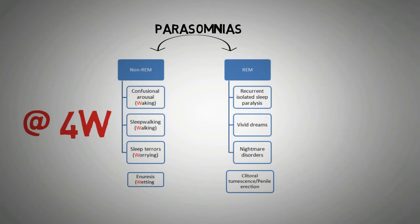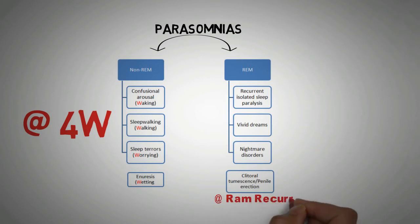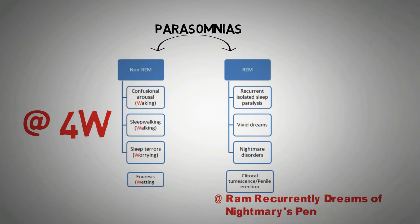Similarly, parasomnias that occur during REM sleep are recurrent isolated sleep paralysis, vivid dreams, nightmare disorders, and one important behavior also seen during REM is penile erection or clitoral tumescence. The mnemonic for them is RAM: 'RAM recurrently dreams of nightmare is pain,' where RAM is for REM sleep, recurrently is for recurrent isolated sleep paralysis, dreams is for vivid dreams, nightmare is for nightmare disorders, and pain is for penile erection or clitoral tumescence.